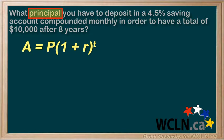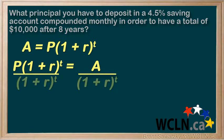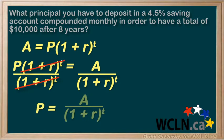We're solving for the principal in this case — we're asked what principal do you need. So let's rearrange for the principal. To do so, we'll divide both sides by (1 plus R) to the T, which cancels out, and we're left with P equals A over (1 plus R) to the T.